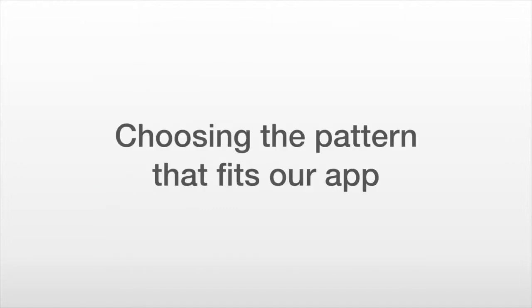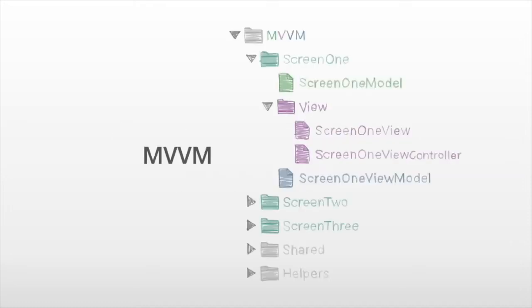So how do we choose a pattern that fits those criteria? We have a lot of presentation logic and UI-related logic, so MVVM provides a great foundation. MVVM allows us to keep the model and the view as demonstrated. We add a View Model responsible for containing our presentation logic, which helps get functionality out of our table view controller and clean it up.